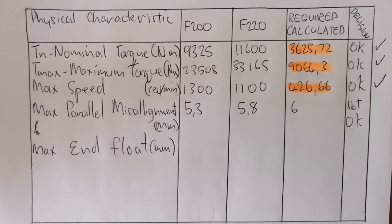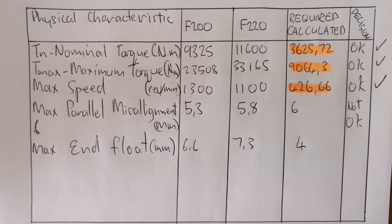Maximum end float - couplings F200 can handle 6.6 millimeters and the F220, 7.3. What we require is 4 millimeters. Therefore it's within spec and it's okay.